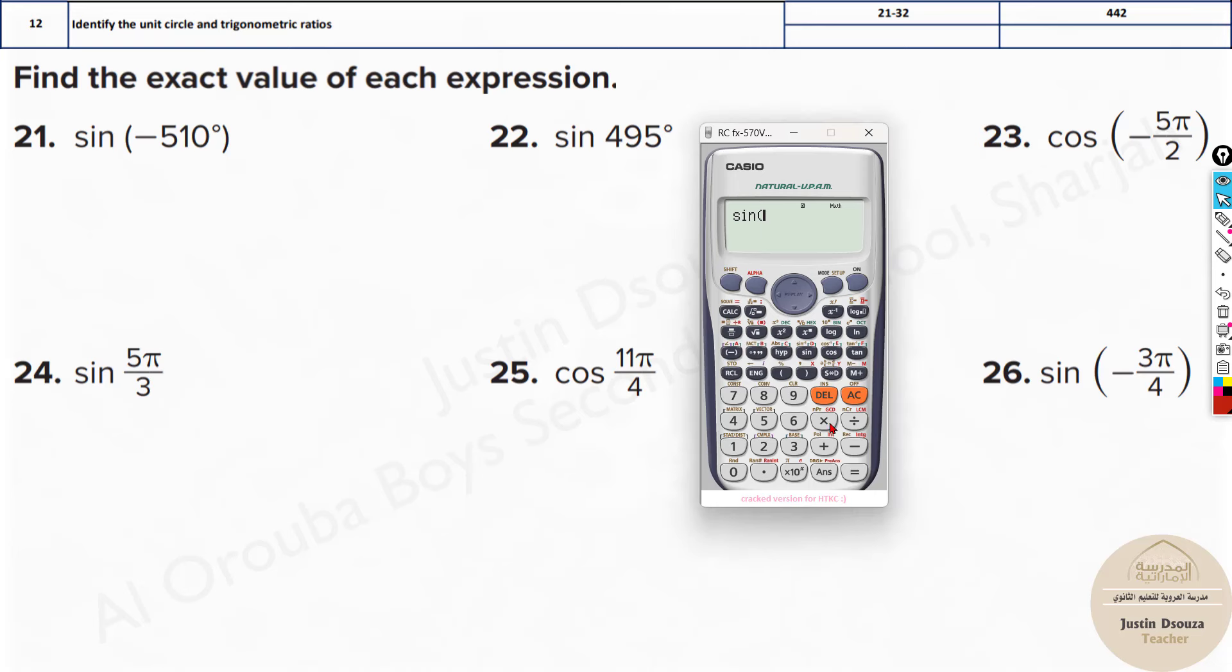So I'll directly do the shortcut method. It is sine negative 510°, close the bracket. Here you go, that is the answer over here.